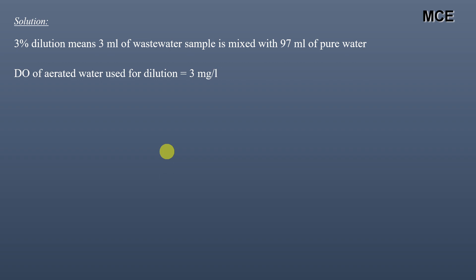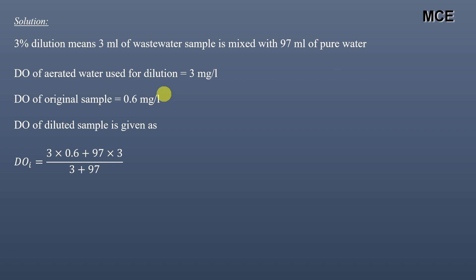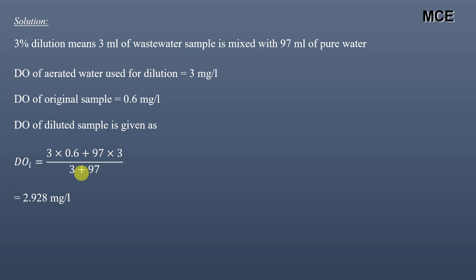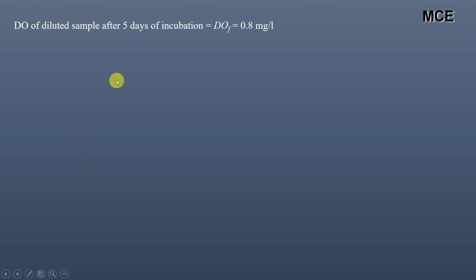We have been given that DO of aerated water for dilution is 3 mg per litre and DO of the original wastewater sample is 0.6 mg per litre. So the DO of the diluted sample immediately after mixing: since 3 ml of wastewater having DO of 0.6 mg is mixed with 97 ml of pure water having 3 mg of dissolved oxygen, the initial DO will be (3 × 0.6 + 97 × 3) / (3 + 97) = 2.928 mg per litre. After 5 days of incubation the DO of the diluted sample is given as 0.8 mg per litre.